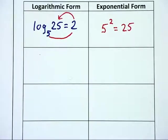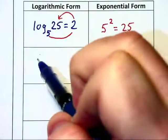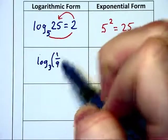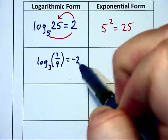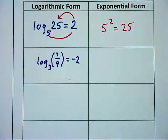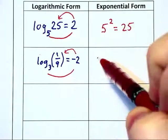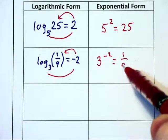Let's do another one. Let's say we have log base 3 of 1 ninth is equal to negative 2. In exponential form, this would be 3 to the negative second power is equal to 1 ninth.